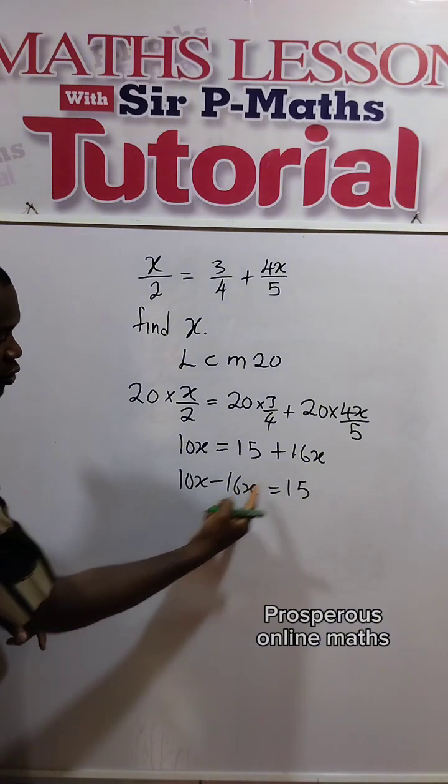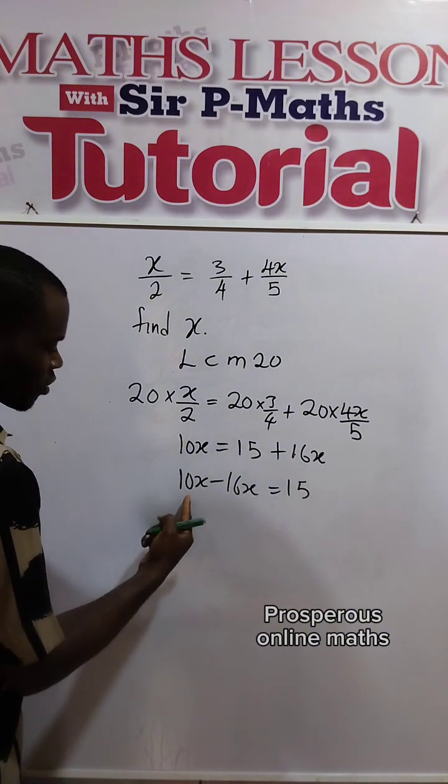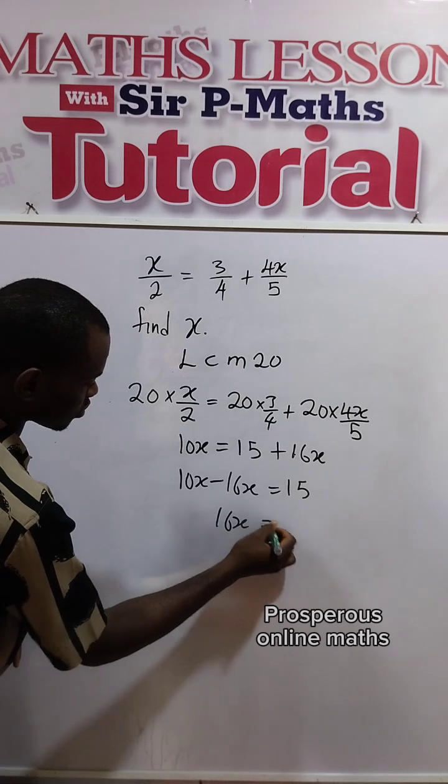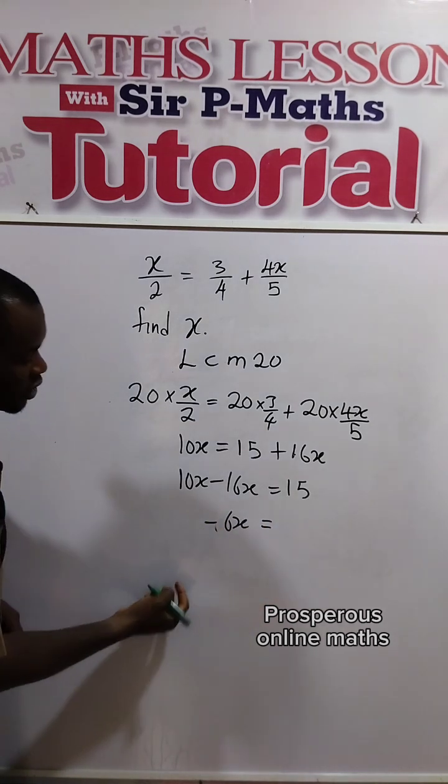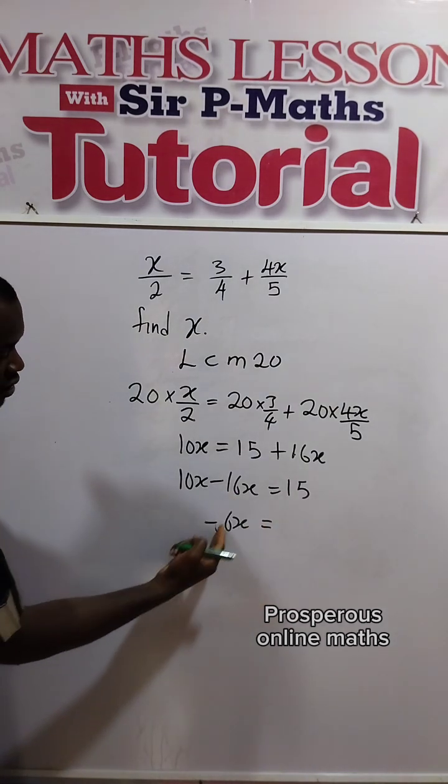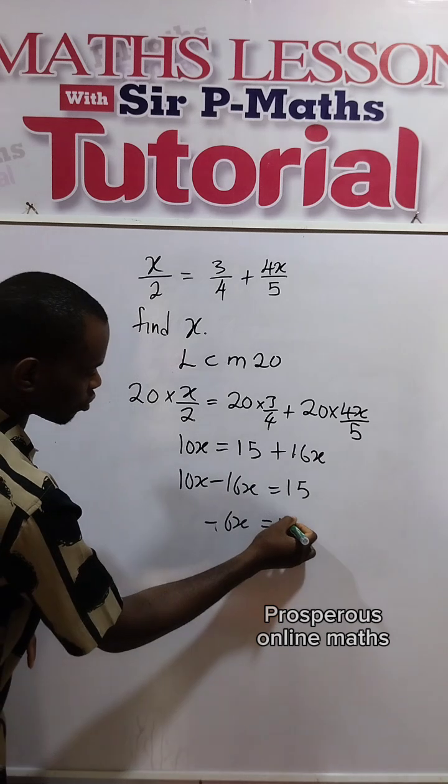It has to become negative because it is positive here. Now subtract here, you have 6x, sorry, minus 6x. 10x minus 16x is minus 6x equals 15.